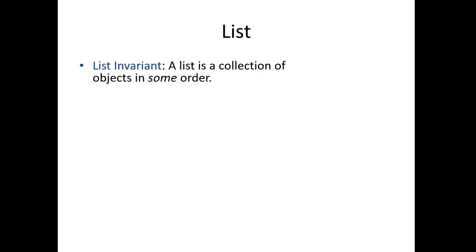One thing that a list does to that package — that collection — is it imposes an order on the data as well. Even if that's not a standard order, there's going to be some specific order: the element that's in position one, the element that's in position two, and so on. So I've extended the collections invariant to define here the list invariant: a collection of objects in some order. I'm not saying the data must be in ascending order if it's numerical, or alphabetical order if it's text. I'm just saying it has to be in some order. There has to be an element that comes first, one that comes second, and third, and so on. Which element comes first, second, and third I have left open — you may fill in that detail.